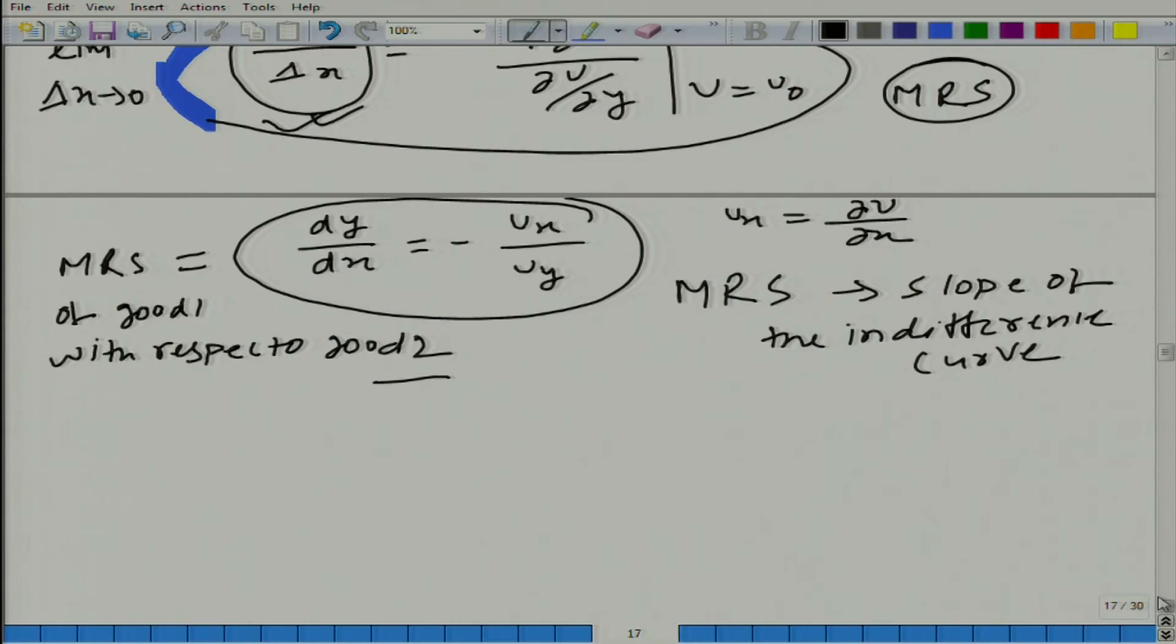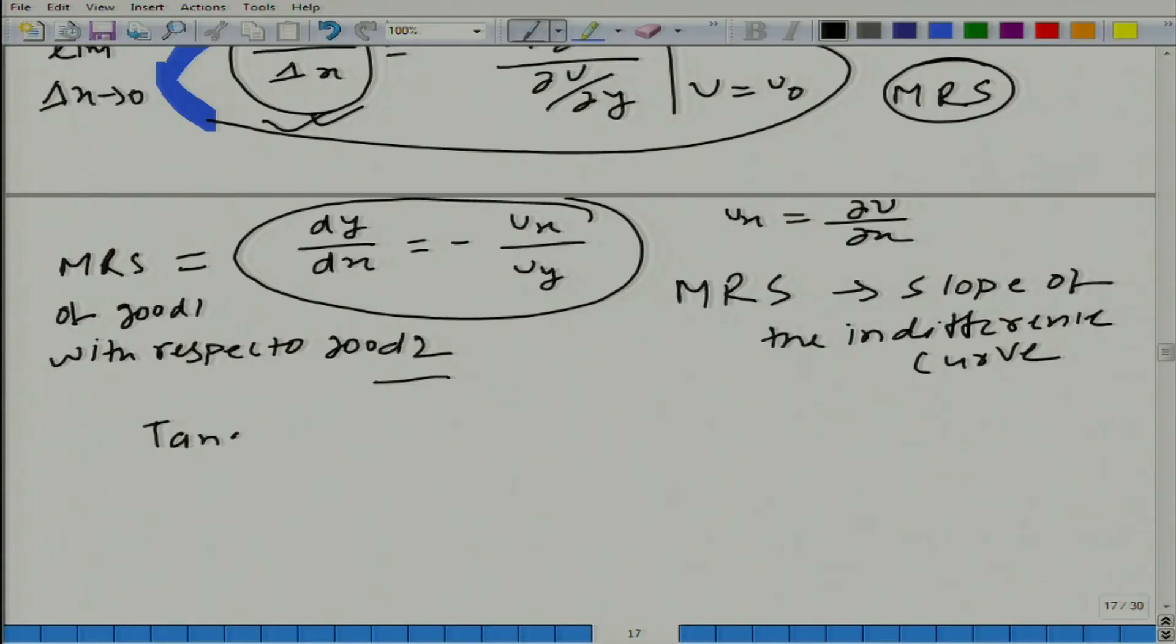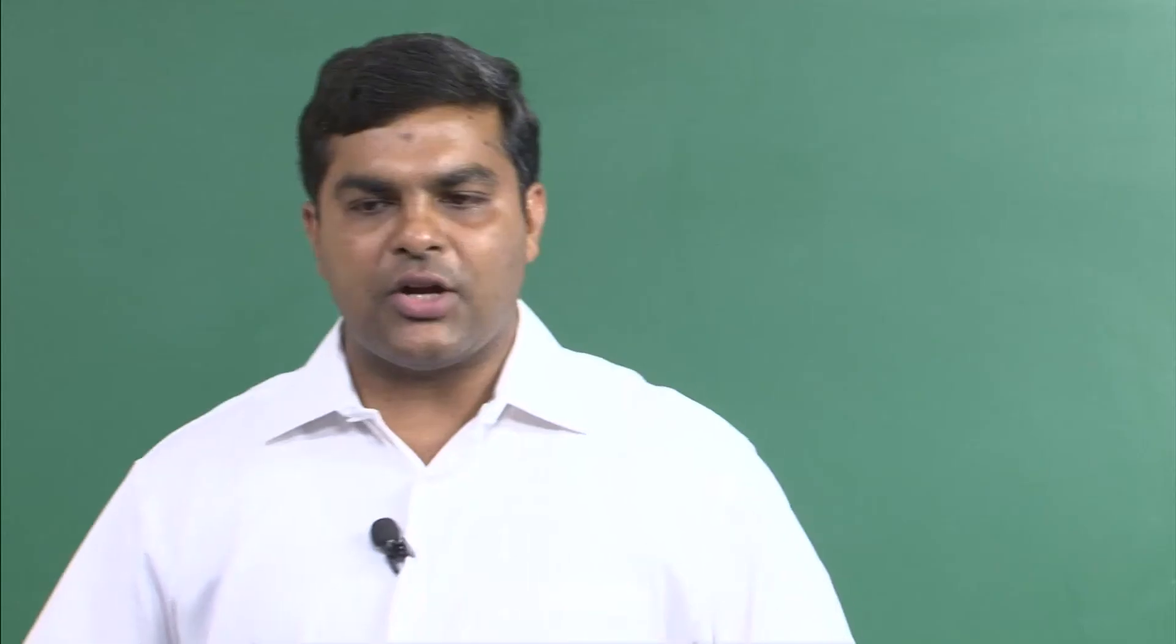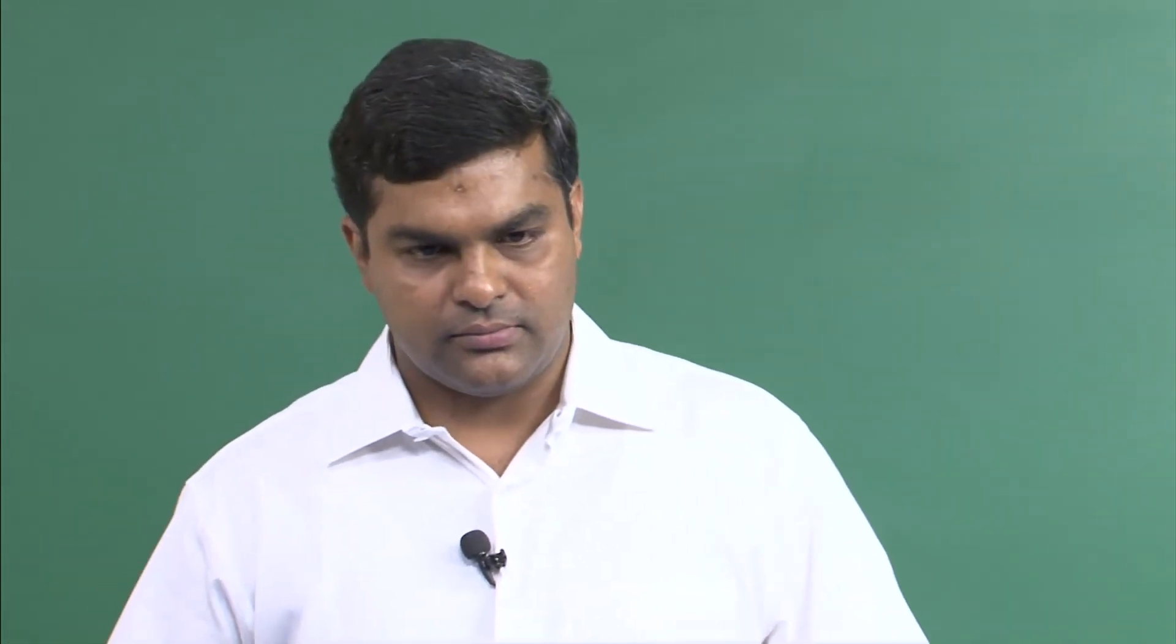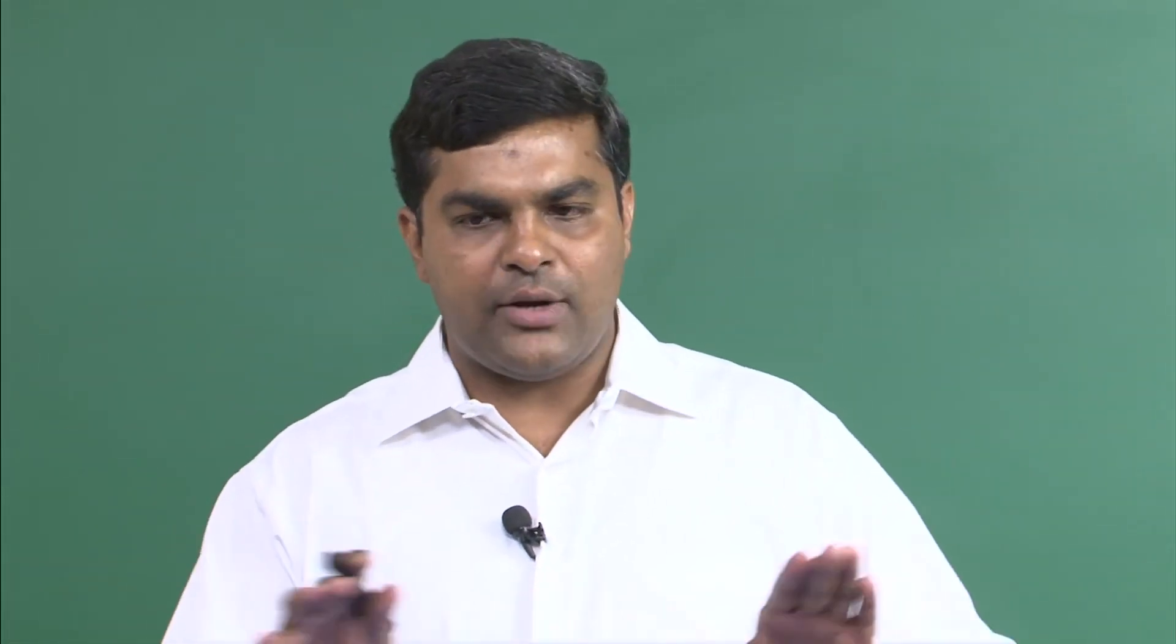So, now what we are talking about is that slope of indifference curve should be equal to the slope of budget line. That is the tangency criteria. Because if it is not true, then indifference curve would intersect the budget line at 2 points. They have to be equal, then only you will get that indifference curve is just touching the budget line.